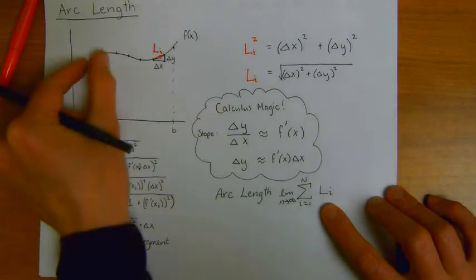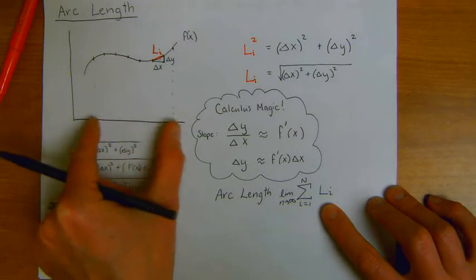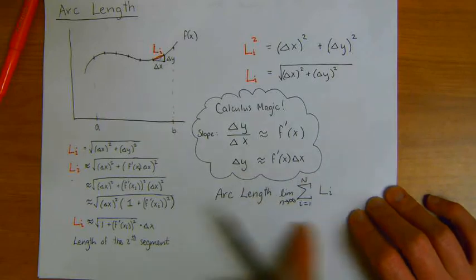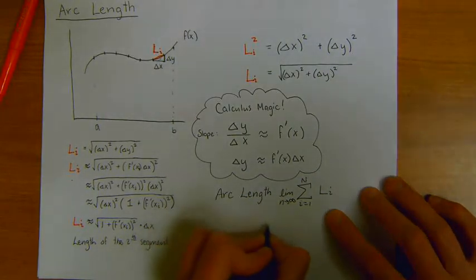And I want to look at the limit of this sum as n goes to infinity. I want to break these intervals up into smaller and smaller pieces. I want to get more and more pieces because this limit will actually yield the exact value.